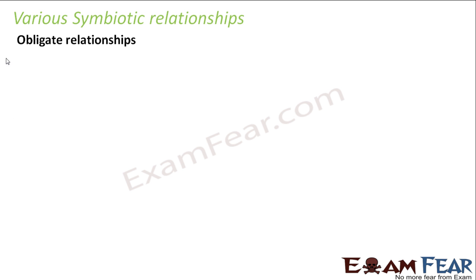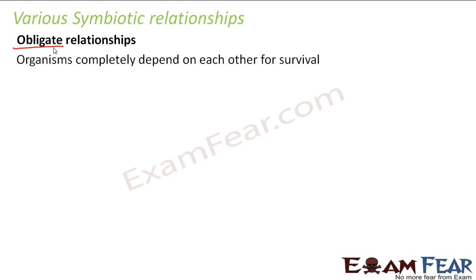The first one is the obligate relationship. The term obligate is derived from the word obligation — it means something which is necessary. So these kinds of relationships mean the organisms are completely dependent on each other for survival. Living with each other is a necessity for the organism; that particular organism cannot live without the other. So this kind of symbiotic relationship is known as an obligate relationship.